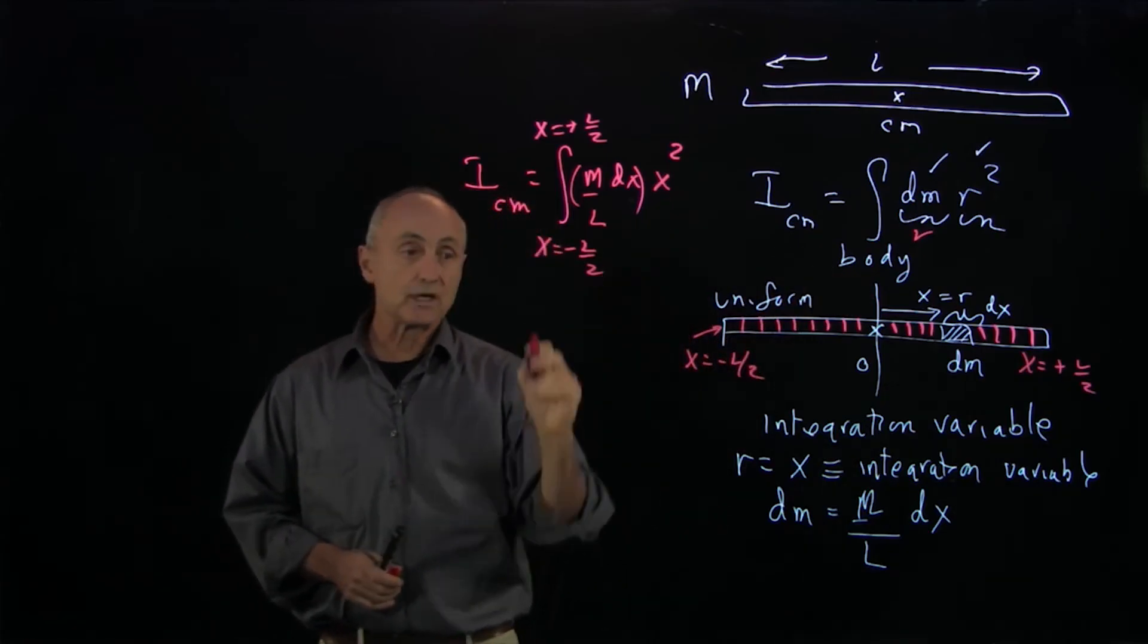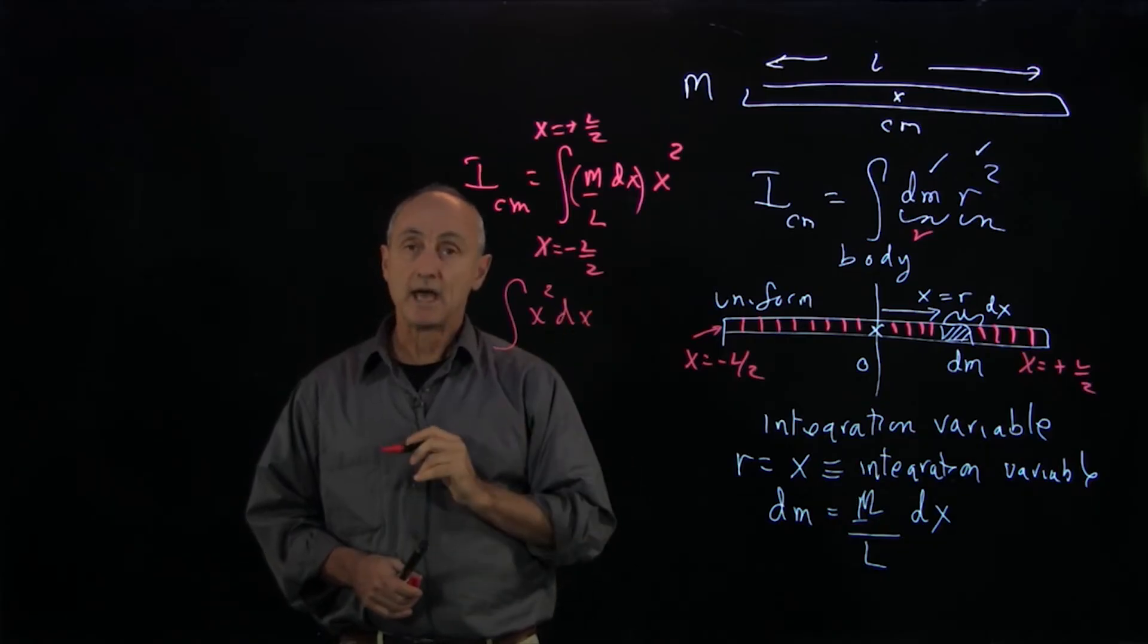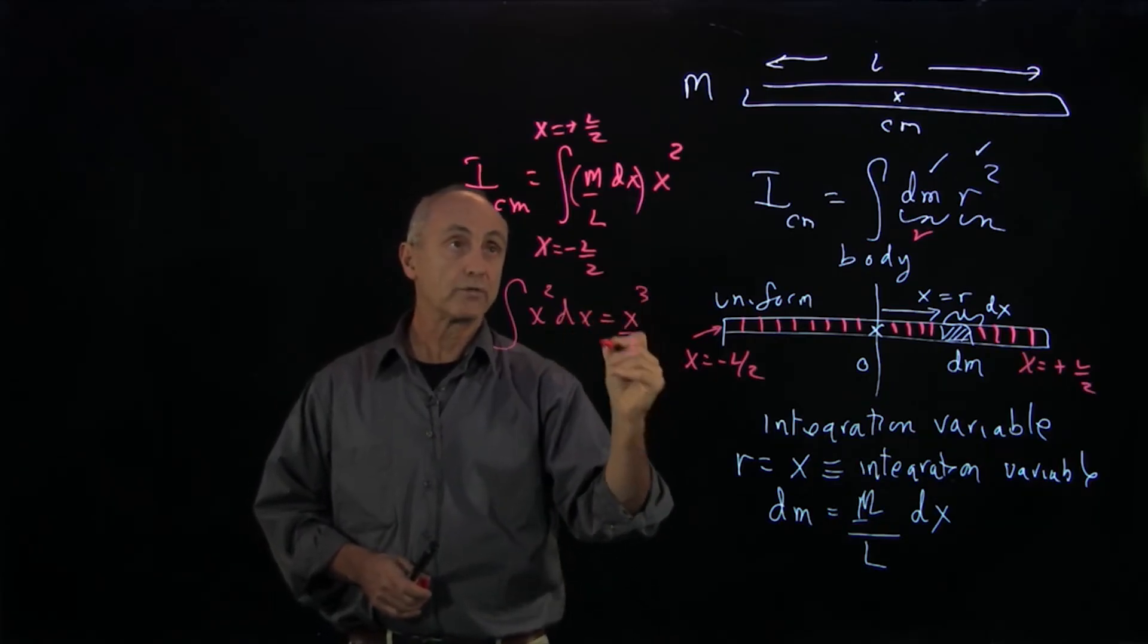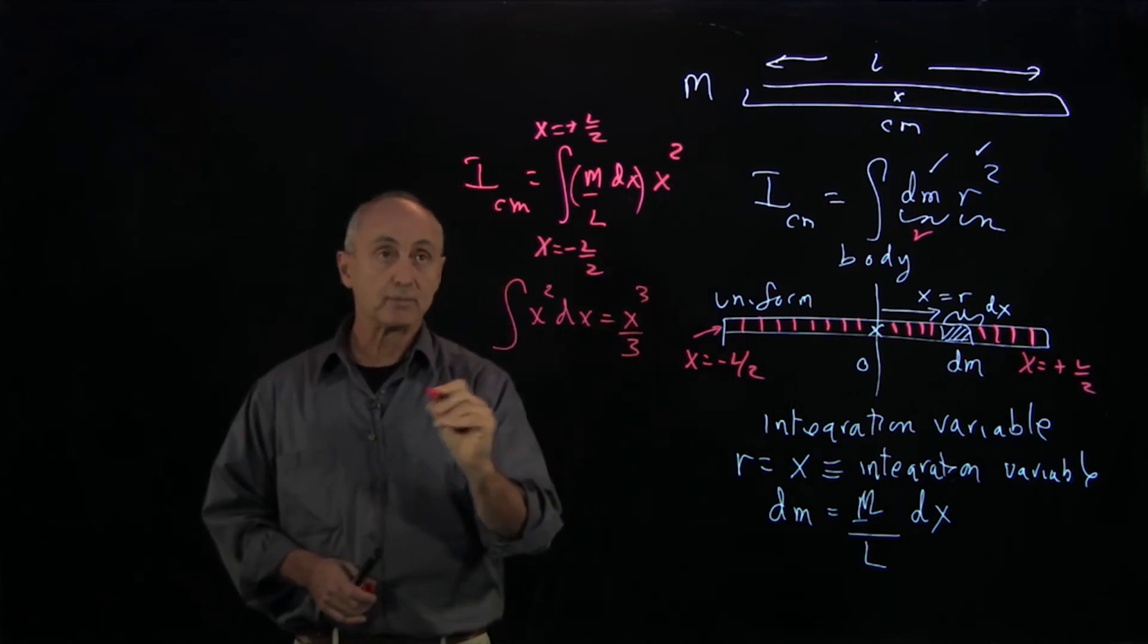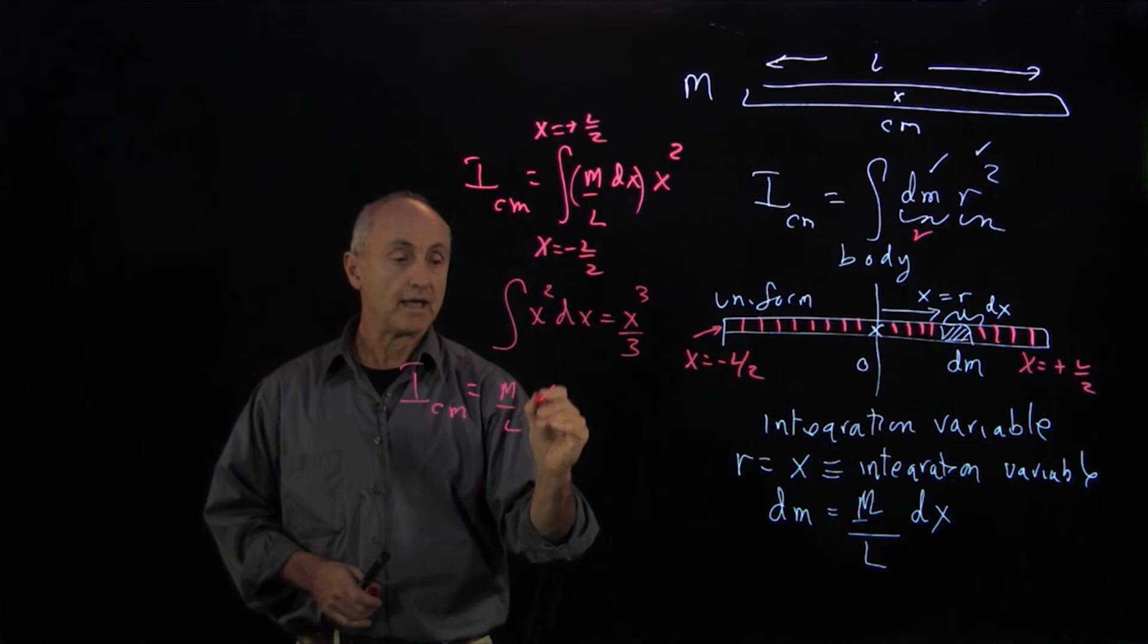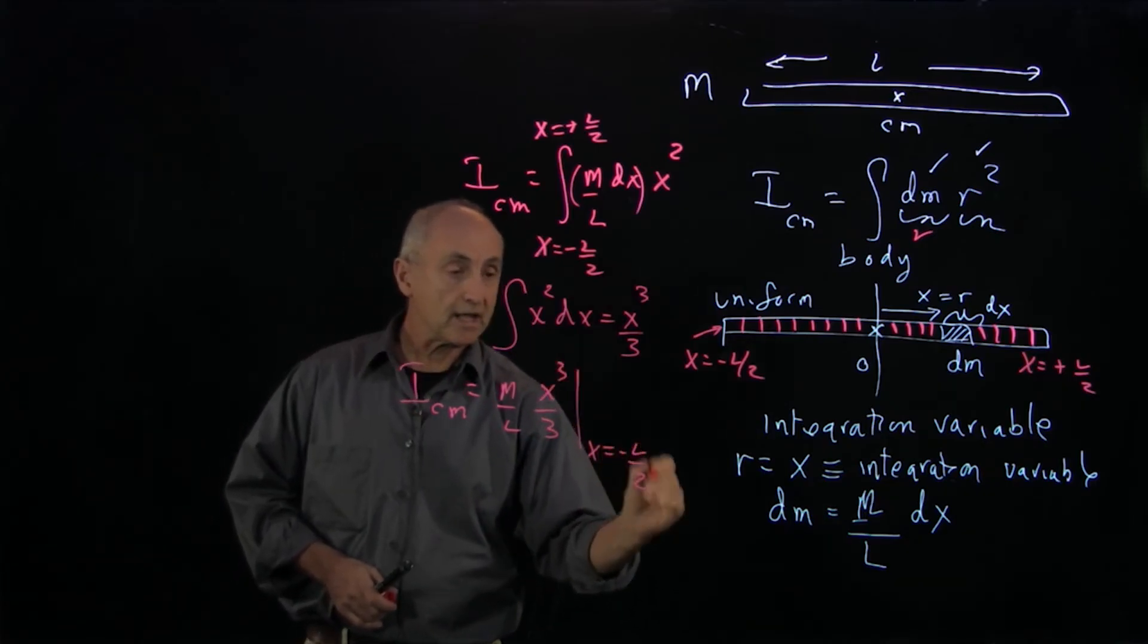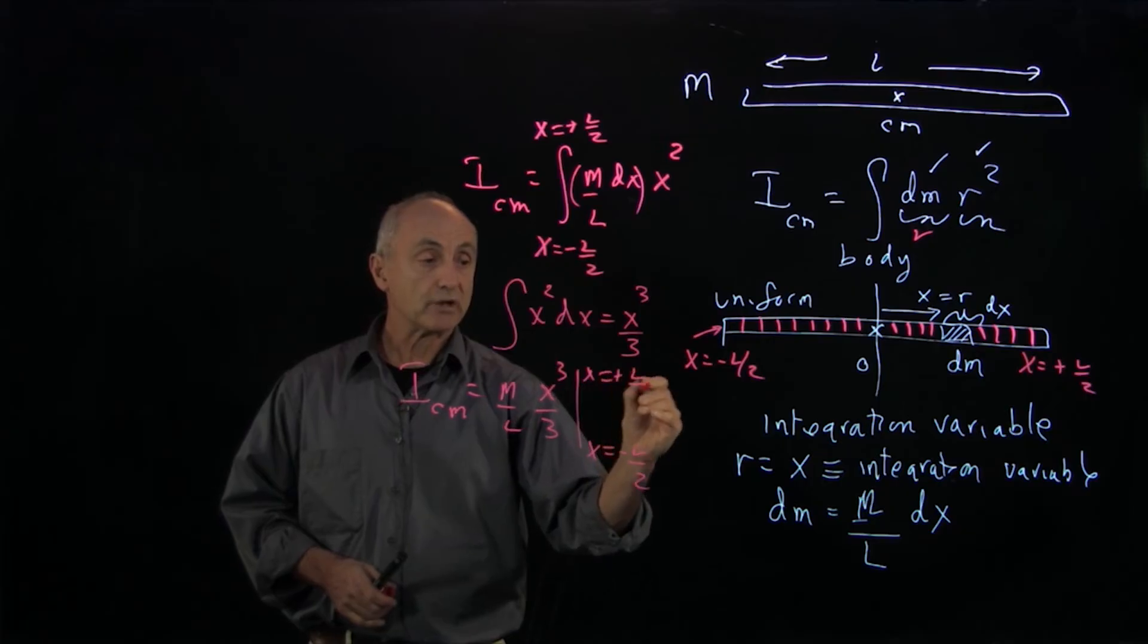The rest is just doing the integral. Recall that the integral of x squared dx is x cubed over 3. So this integral simply becomes I_cm equals m over l times x cubed over 3, evaluated from the limits minus l over 2 to plus l over 2.